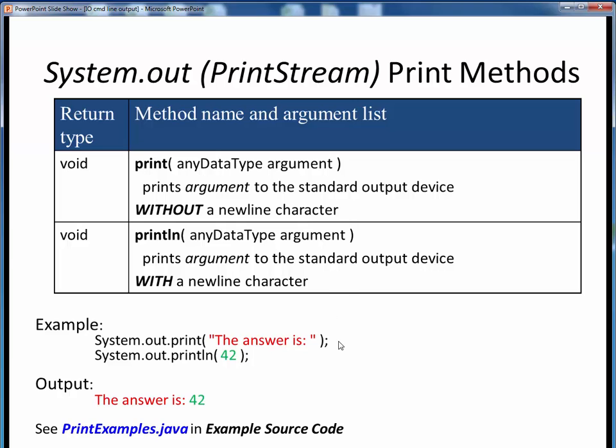Here's an example of the difference. This first print statement displays the text, The Answer Is, but leaves the output cursor placed at the end of that text, as shown here in red. The second print statement then prints the text equivalent of this numeric 42, but then kicks the output cursor down to the next line.